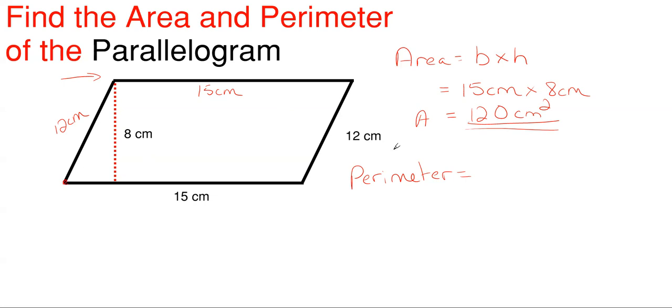So perimeter will just be adding all your sides together. Since we have a four-sided shape as a parallelogram, we'll be adding four numbers together and it's just all the sides put together. So we will have 12 centimeters for this one, go to the next one plus 15 centimeters.